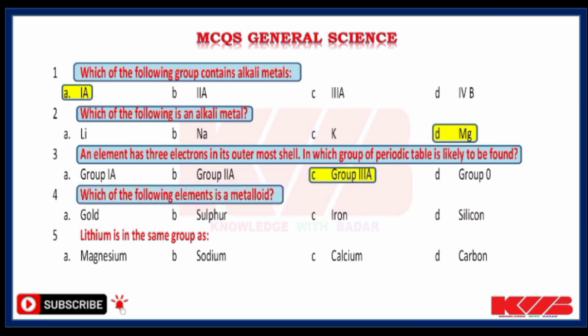Which one of the following elements is a metalloid? Gold, sulfur, iron or silicon? Yes, silicon. Lithium is in the same group as Magnesium, Sodium, Calcium or Carbon? Yes, Sodium.